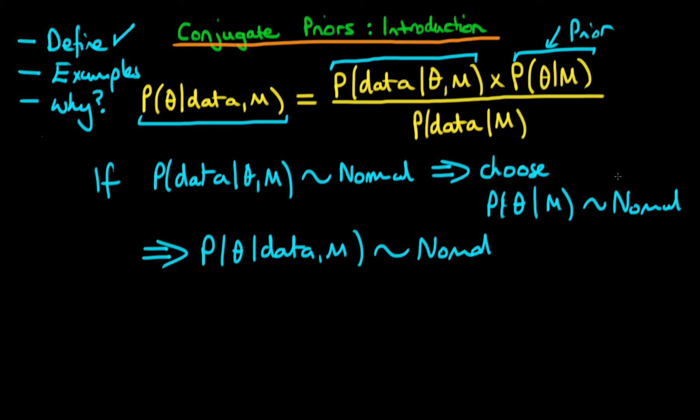If I was to choose, for example, a gamma distribution here for the prior, for, in this case, theta, then the posterior would not have this nice, neat form, and it wouldn't simply just be a gamma distribution or a normal distribution. It would be potentially some rather horrible distribution, which wouldn't be as nice to work with.